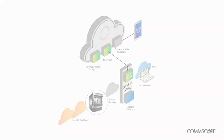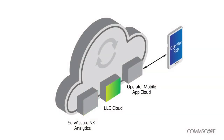The CommScope LLD cloud controls the LLD client on gateways and analyzes trend data to optimize latency for the best possible user experience. Additionally, a mobile app provides real-time latency performance data to the end user.